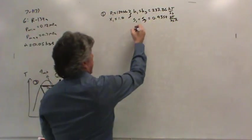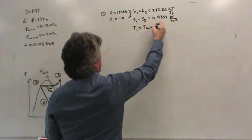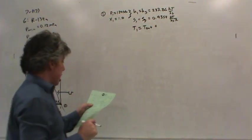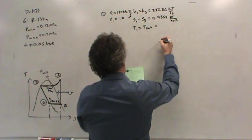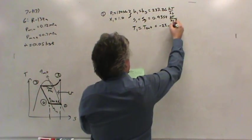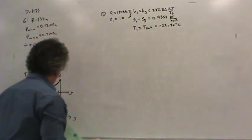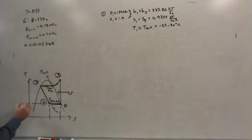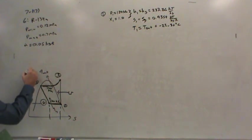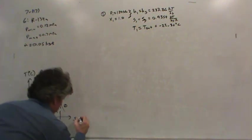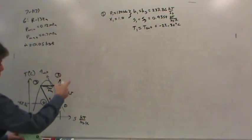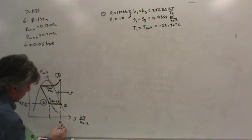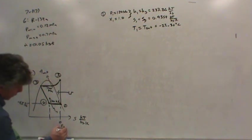Since I want to make my diagram look nice, I'm going to find the saturation temperature at 120 kilopascals, which is negative 22.36 degrees Celsius. This line down here is at negative 22.36 degrees Celsius, and the entropy at state one is 0.9354 kilojoules per kilogram per kelvin.